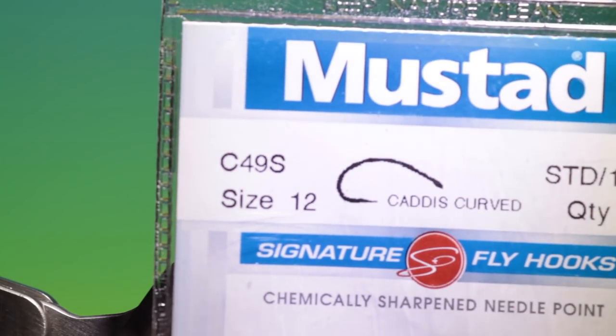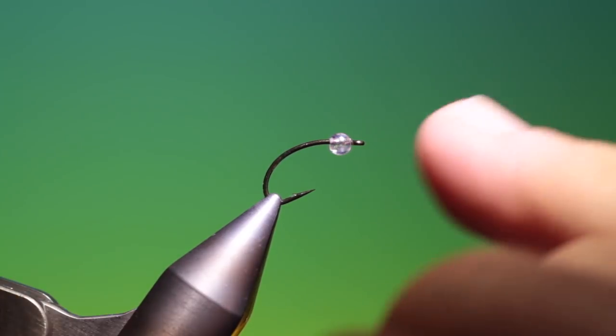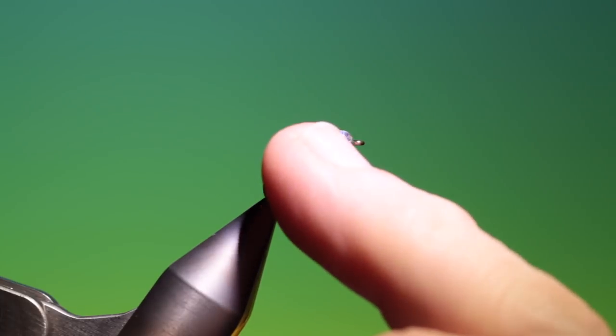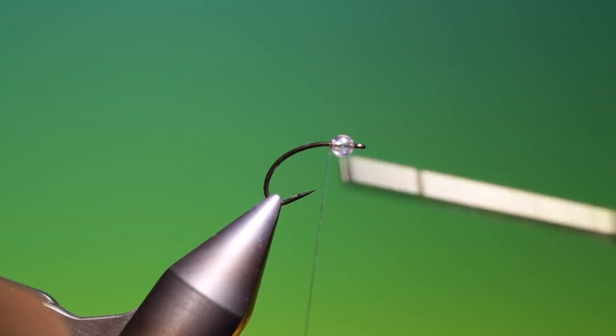Okay, we'll start with the Mustard C49S size 12. I would normally tie this on a smaller hook but I don't think you'd see it on the camera. So this is a little kind of pearlescent bead I buy from the hobby shop.